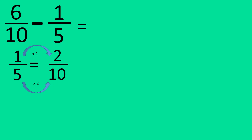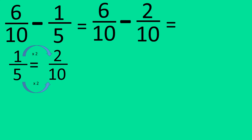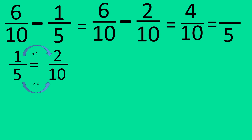Let's write down the question again: six over ten minus two over ten. The denominator will stay the same, and when you take away two from six, you get four. But this can be simplified into something else. When you divide ten by two, you get five, so we're going to have to do the same to the top. When you divide four by two, you get two. Two fifths is the answer.